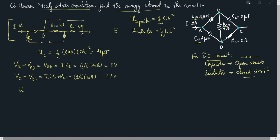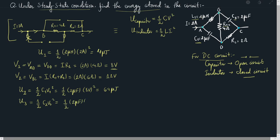The energy stored in capacitor C1 is U2 = half times C1 times V1 squared = half times 2 microfarad times (8 volts) squared = 64 microjoules. Similarly, the energy stored in capacitor C2 is U3 = half times C2 times V2 squared = half times 2 microfarad times (12 volts) squared = 144 microjoules.